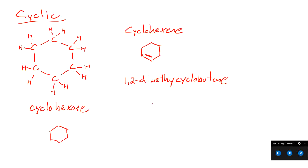Since it's a cycle, we just start our lowest-number carbon wherever our first group is to put the rest of the groups on the lowest numbers. You can have two groups coming off the same carbon or off different ones. You can have alcohol groups and ketones on cyclic compounds. However, you cannot have a carboxylic acid or an amide on a cyclic compound, because there is no end of the chain to put that functional group on.